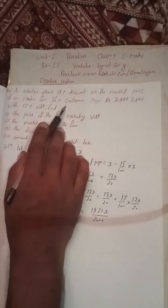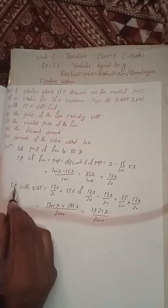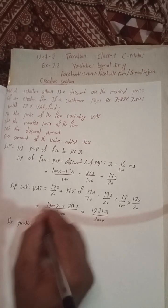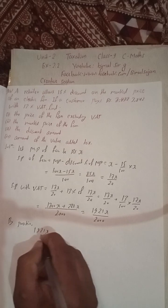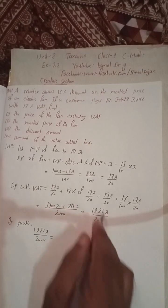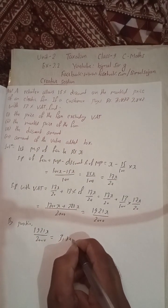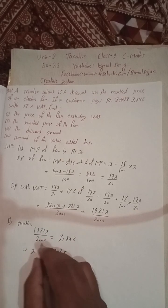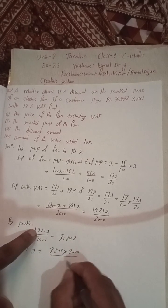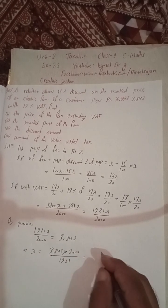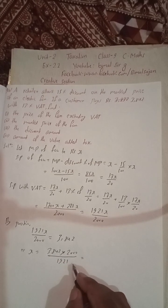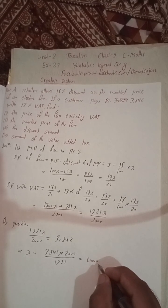The question states the customer pays Rs 3842 with 13% VAT, so we set SP with VAT equal to 3842. Therefore: 1921X/2000 = 3842. Solving: X = 3842 × 2000/1921 = 4000. So the marked price X = Rs 4000.